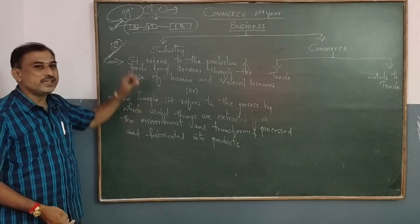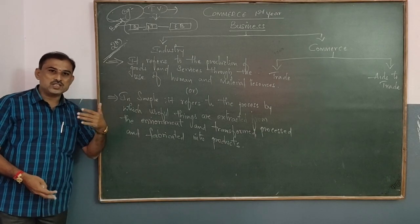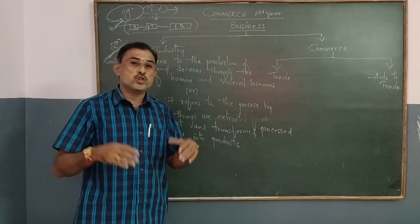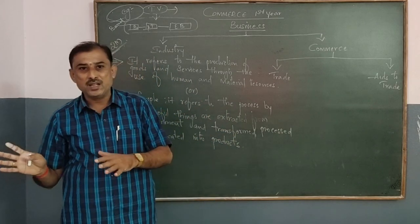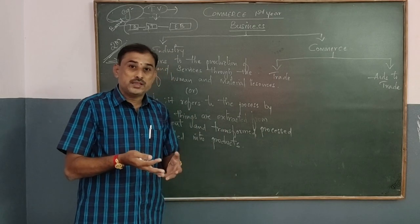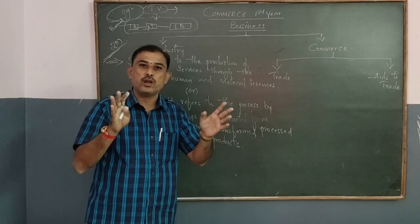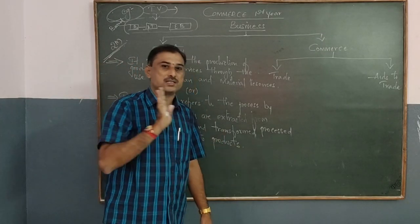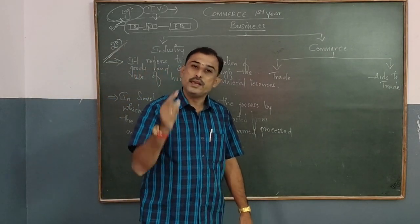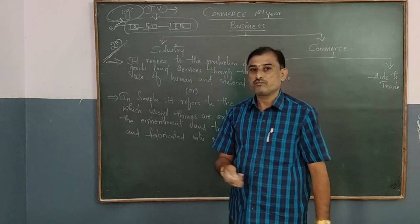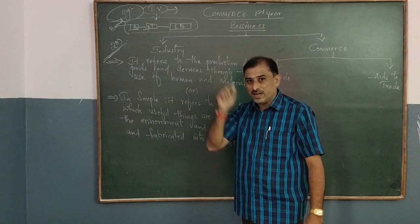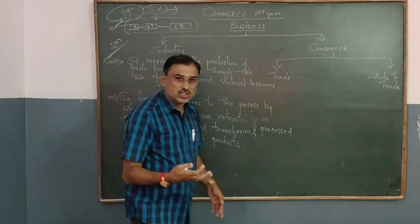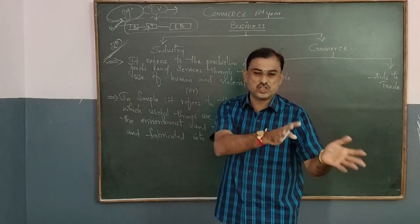In simple language, industry means it does not have to be a big place with a large number of machines and employees. Industry includes both small and large places, but where the production process takes place is called an industry. The work that takes place there is converting goods and services with the use of human skills and material resources — converting raw material into finished goods.